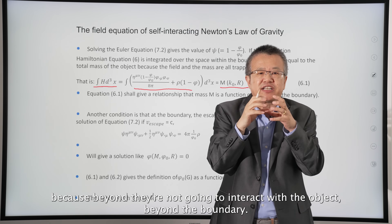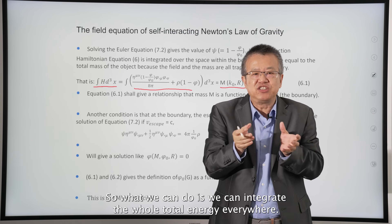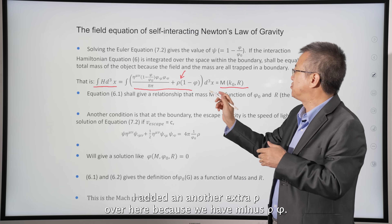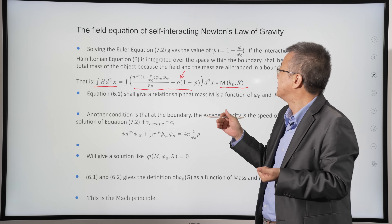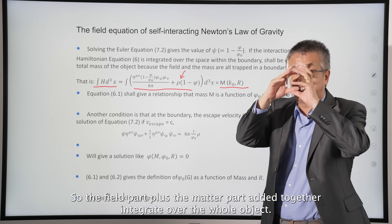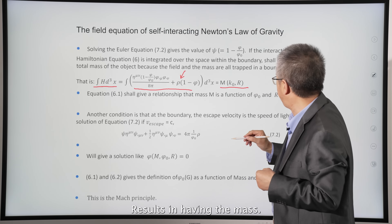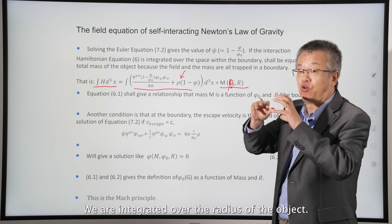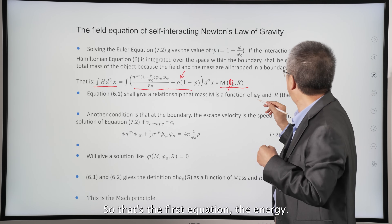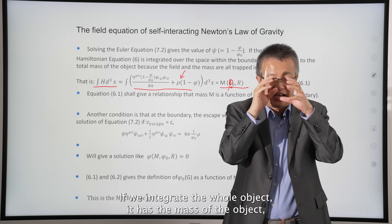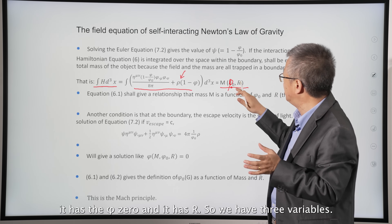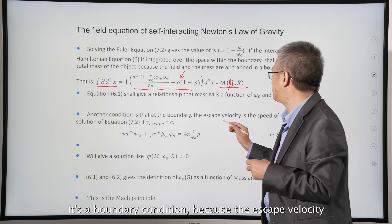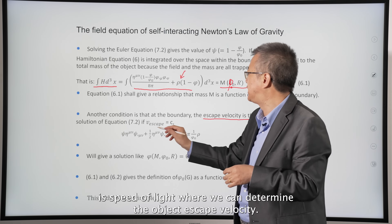We can integrate the total energy over the whole object, since beyond the boundary there's no interaction. Integrating the field part plus the matter part over the whole object gives the mass. But we have Phi_zero, so after integration we have Phi_zero, the radius R, and the mass — three variables. Another condition comes from the boundary condition: the escape velocity equals the speed of light, giving us a second equation.